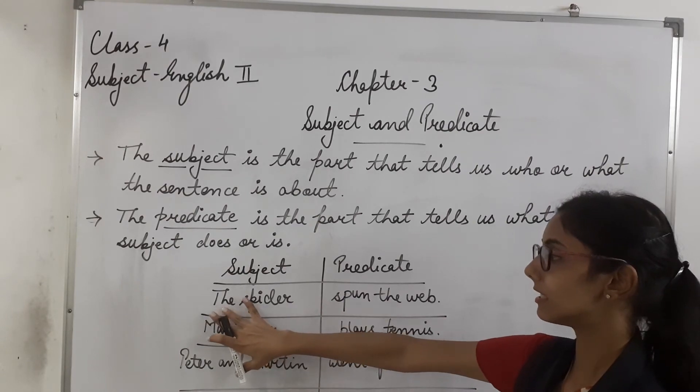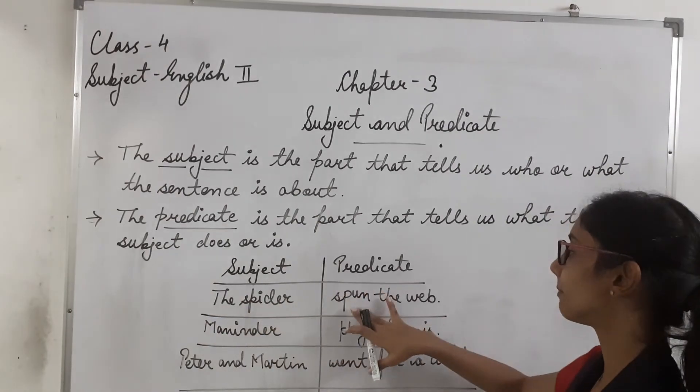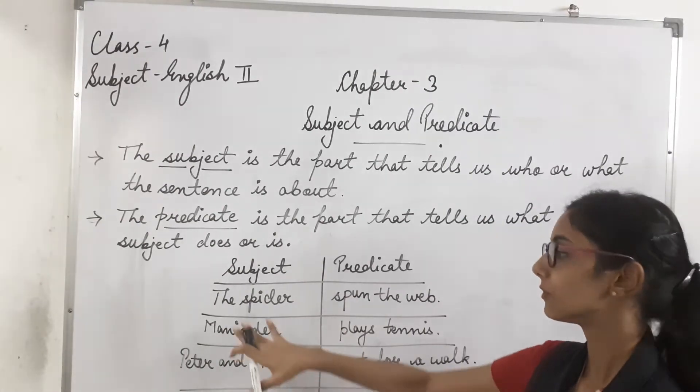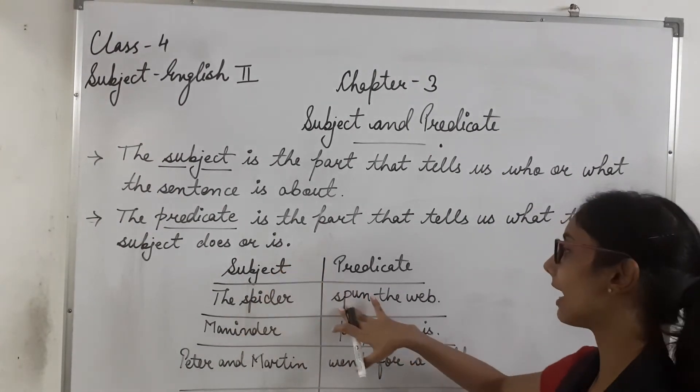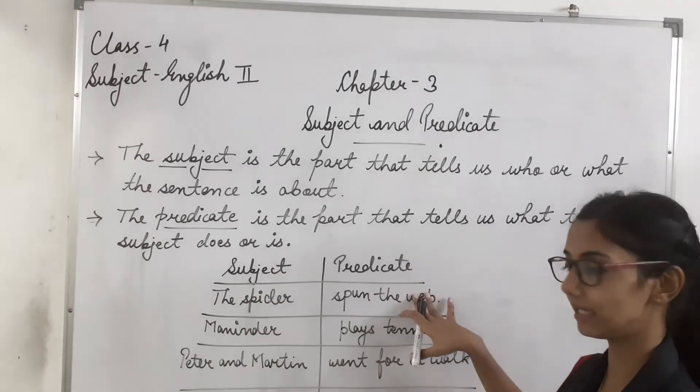So in this sentence, the spider spun the web. Toh hum nha isko dho part me divide kya. Toh the spider is our subject and spun the web is our predicate.